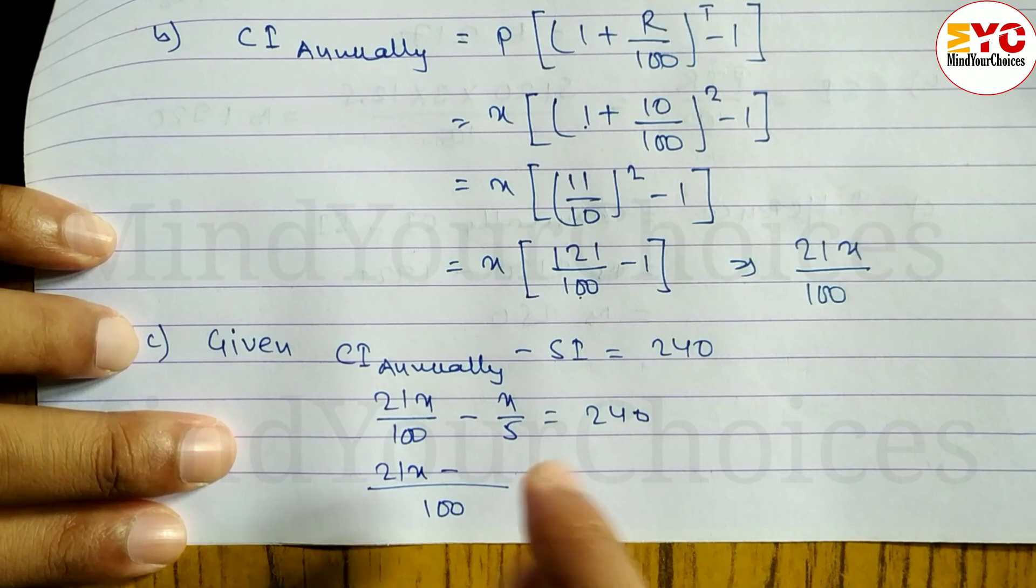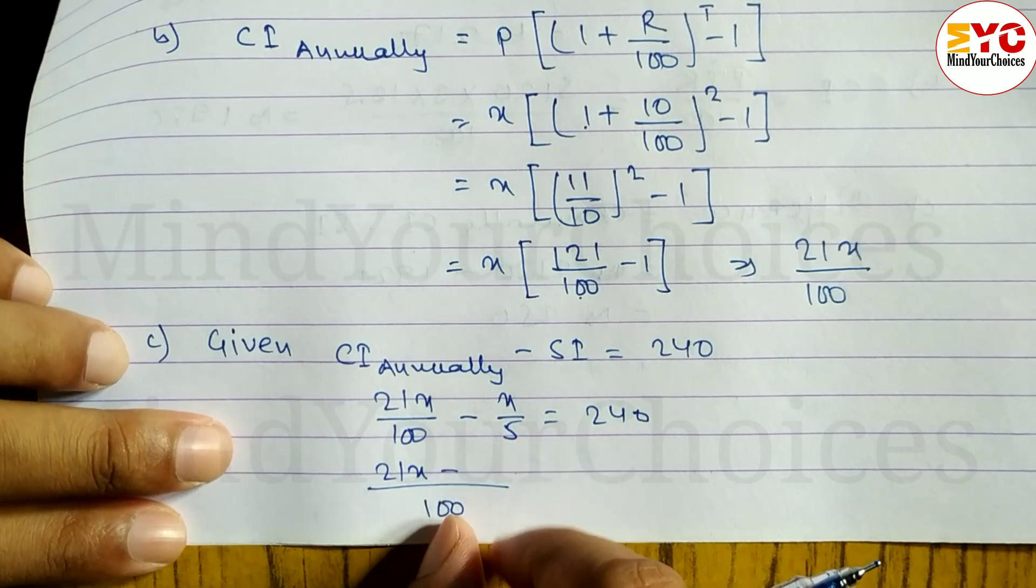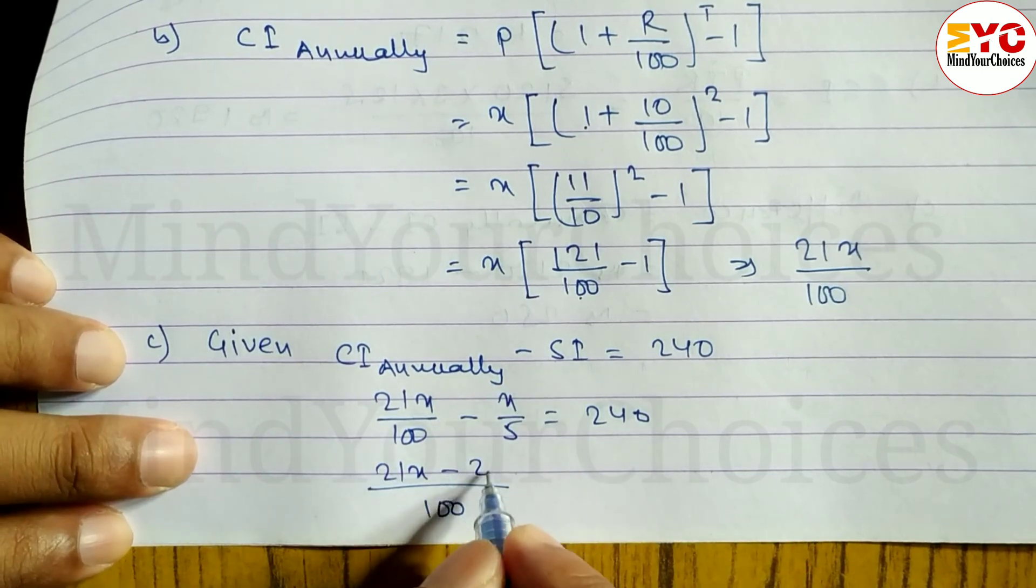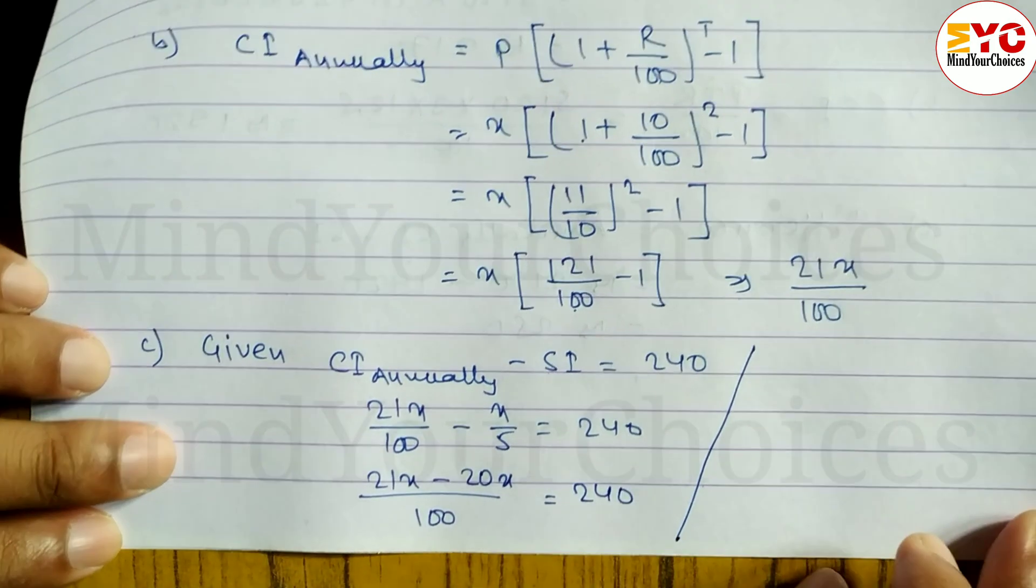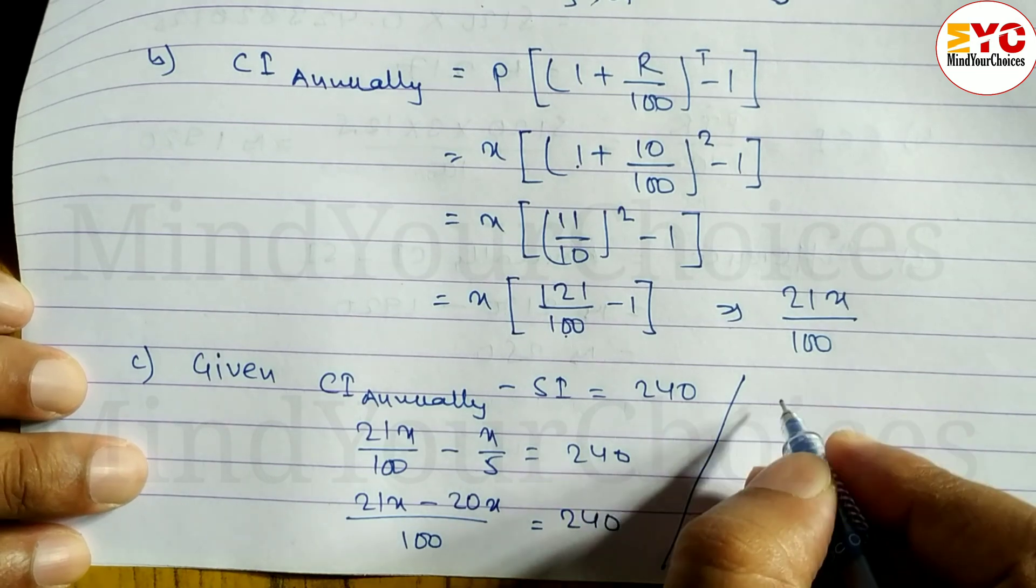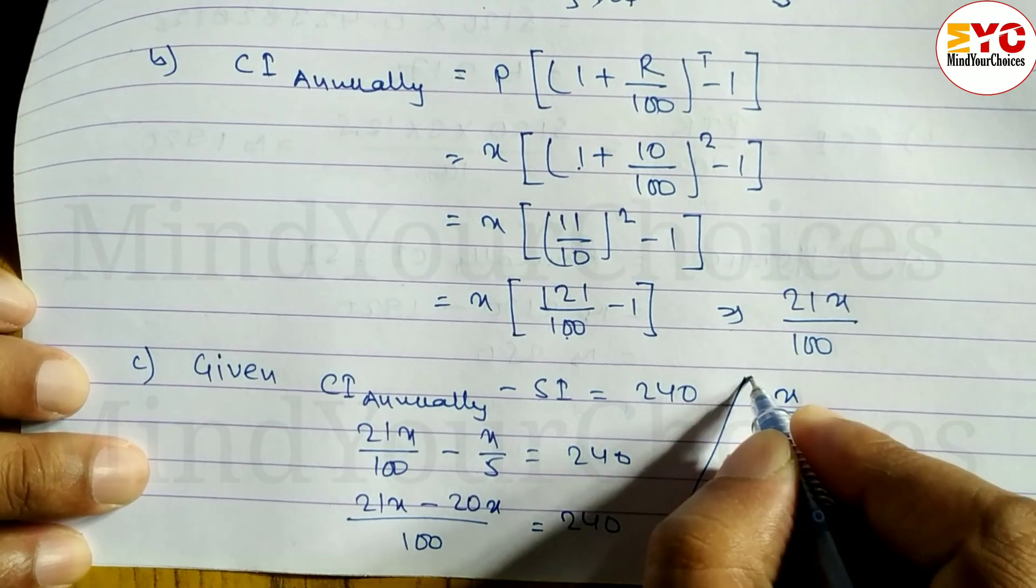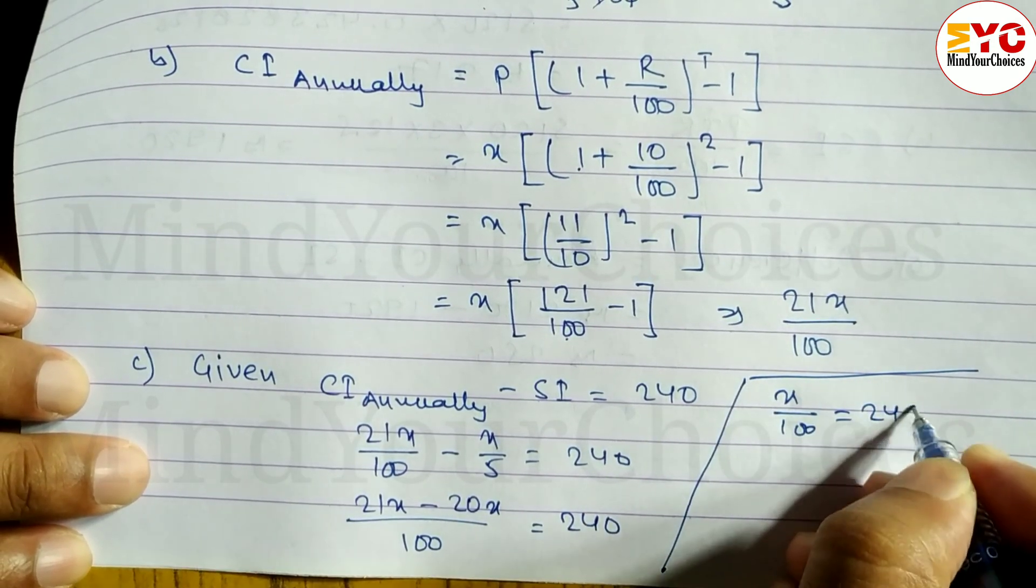Take LCM. 21x minus, divide by 100, divide by 5, we get 20x. So x divided by 100 is equal to 240.